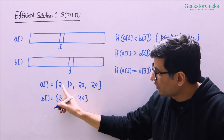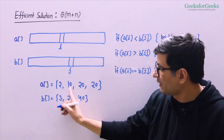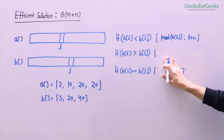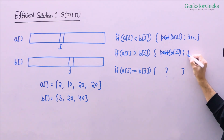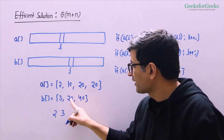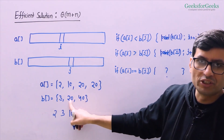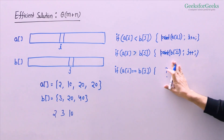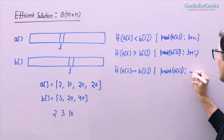If b[j] is smaller, we print b[j] and move ahead in array b with j++. When a[i] equals b[j], we print a[i] and move ahead in both arrays with i++ and j++. To handle duplicates, we add extra conditions: if a[i] equals a[i-1] (when i > 0), we simply skip and continue. Similarly, if b[j] equals b[j-1] (when j > 0), we also skip and continue.